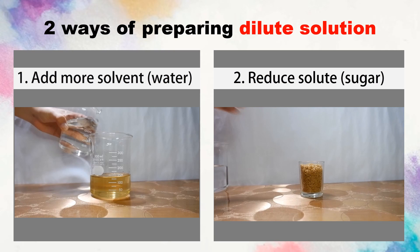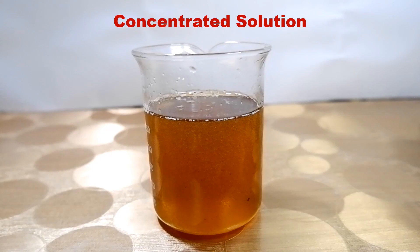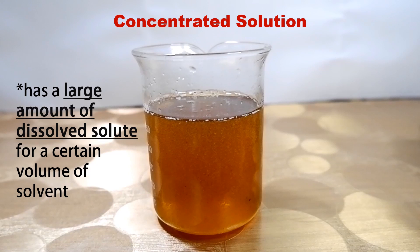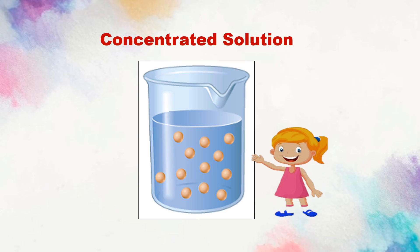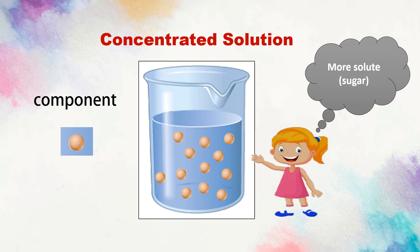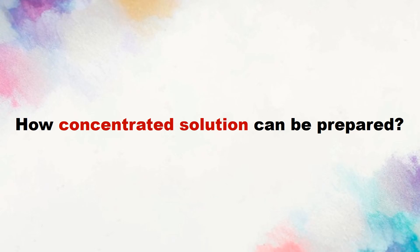Now let us proceed to concentrated solution. Concentrated solution has a large amount of dissolved solute for a certain volume of solvent. The color of concentrated solution is darker compared to the color of dilute solution. Looking closely at the particles, the components represented by the orange circle are the particles of solute or sugar dissolved in water. There is a large amount of solute or sugar dissolved in a certain volume of solvent — it has more solute or sugar for a given amount of solvent or water.